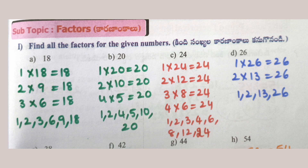24: 1×24=24, 2×12=24, 3×8=24, 4×6=24. So factors of 24 are 1, 2, 3, 4, 6, 8, 12, 24.